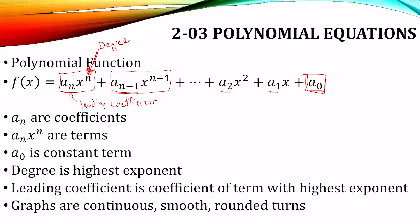The graphs of polynomial functions are continuous - no holes - smooth, and nice rounded turns, no sharp corners.